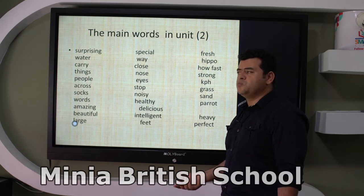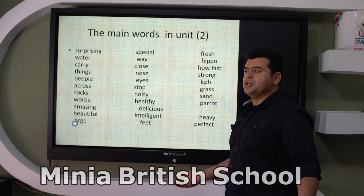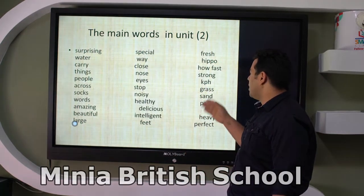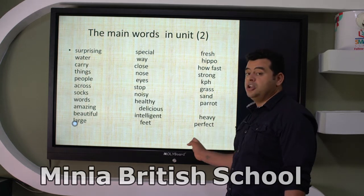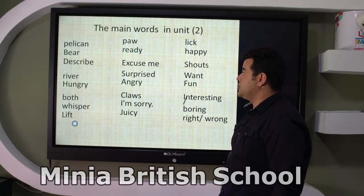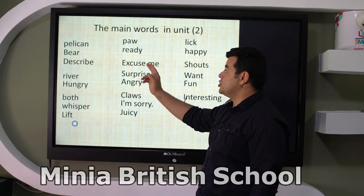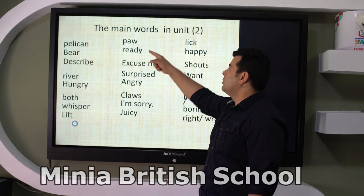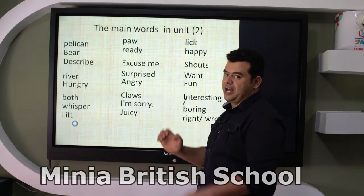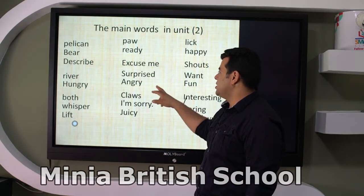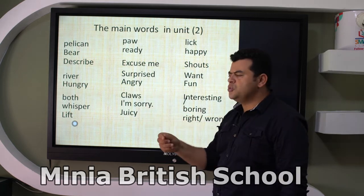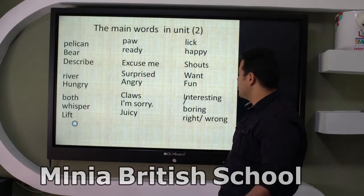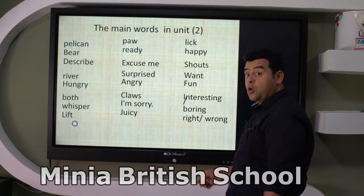Intelligent, feet, fresh, hippo. 'KPH' — whenever you see this, it means kilometers per hour. For example, this horse can run very fast — like 60 kilometers per hour, written as KPH. More words: grass, sand, parrot, heavy, perfect, pelican, bear, describe, river, hungry, both, whisper, lift, close, excuse me, surprised, angry, juicy, lick, happy, shout, warned, fun, interesting, boring, right, wrong.